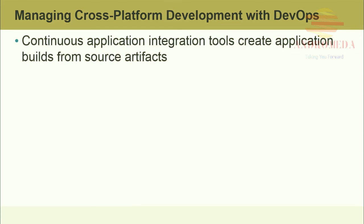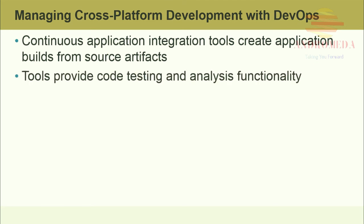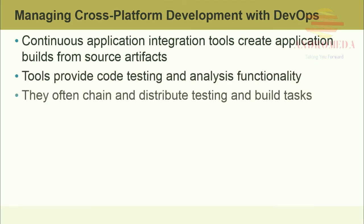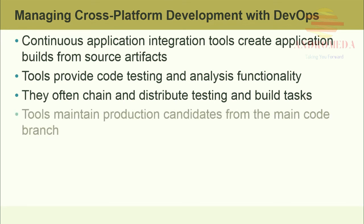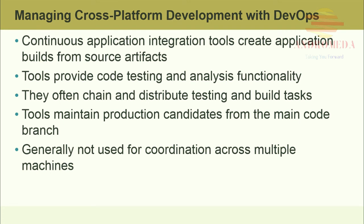Continuous application integration, or CI tools, create application builds from source artifacts. Artifacts include build scripts such as legacy tools like Ant. Tools provide code testing and analysis functionality and often chain and distribute testing and build tasks. The concept of continuous integration and continuous delivery assumes that the code branches being used are also in a deployable state, making application deployment a very rapid process. Tools maintain production candidates from a main code branch. Continuous integration tools are generally not used for coordination across multiple machines.